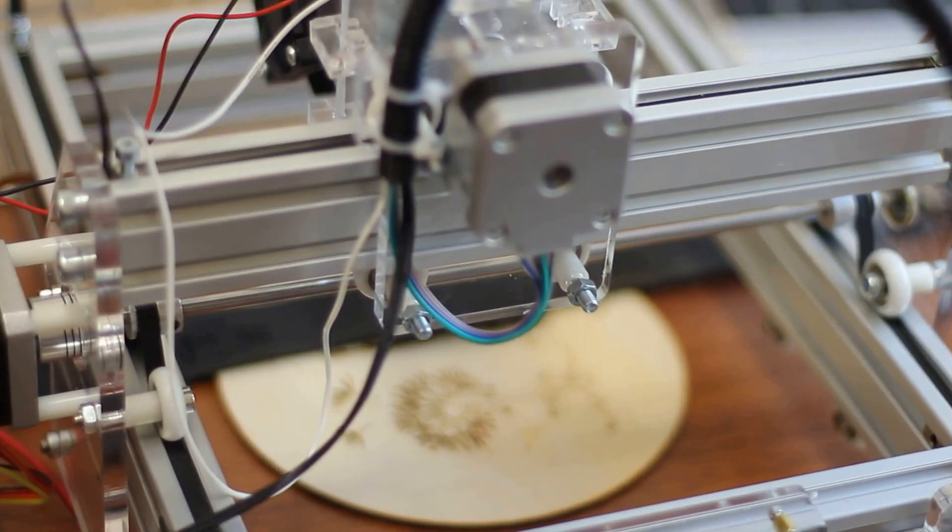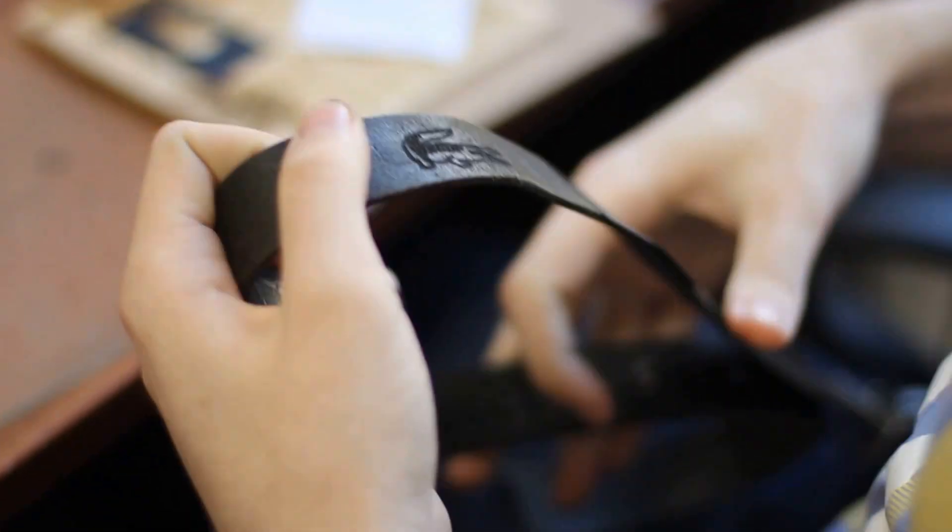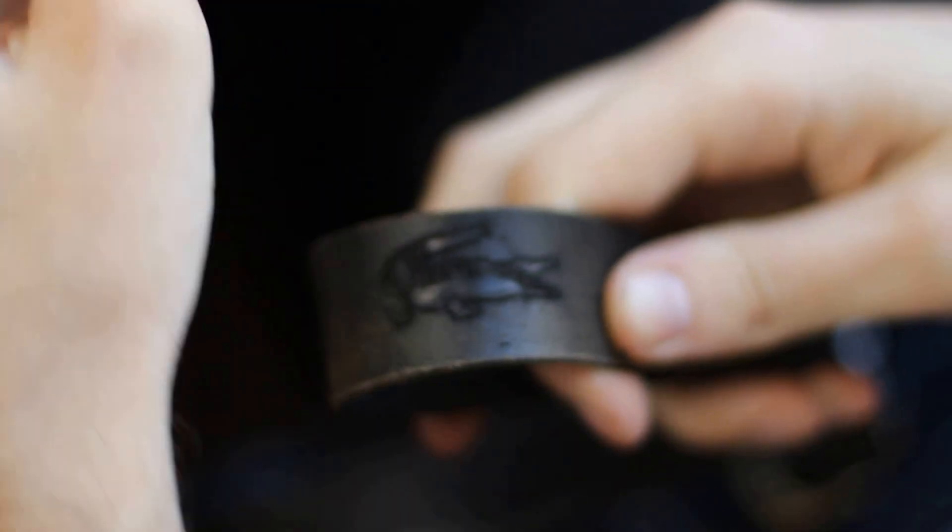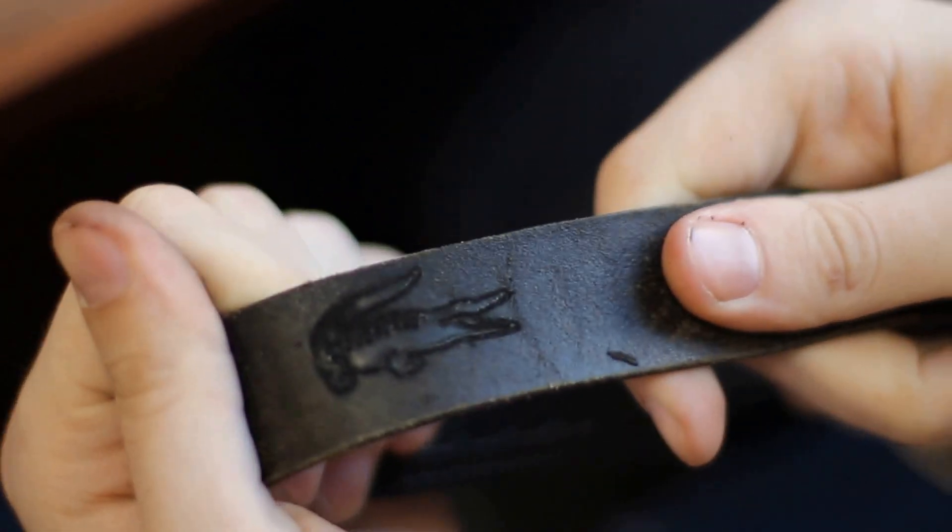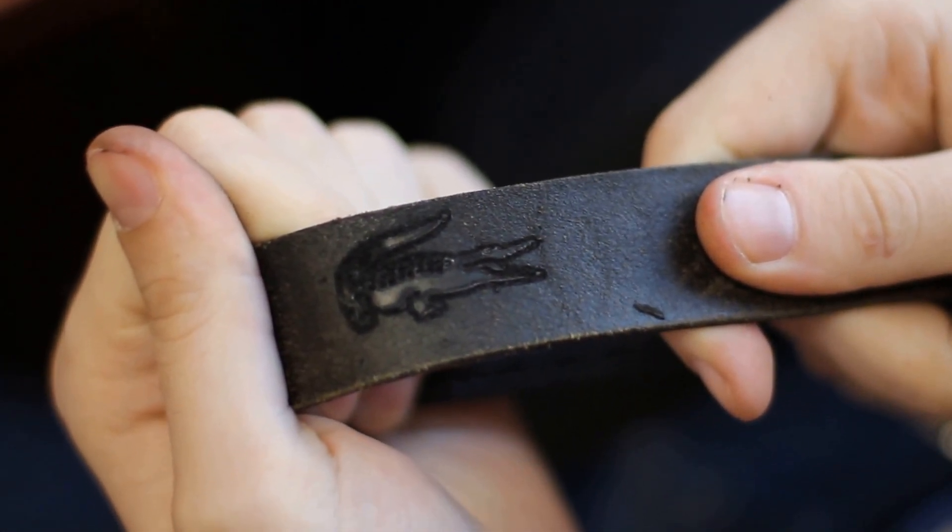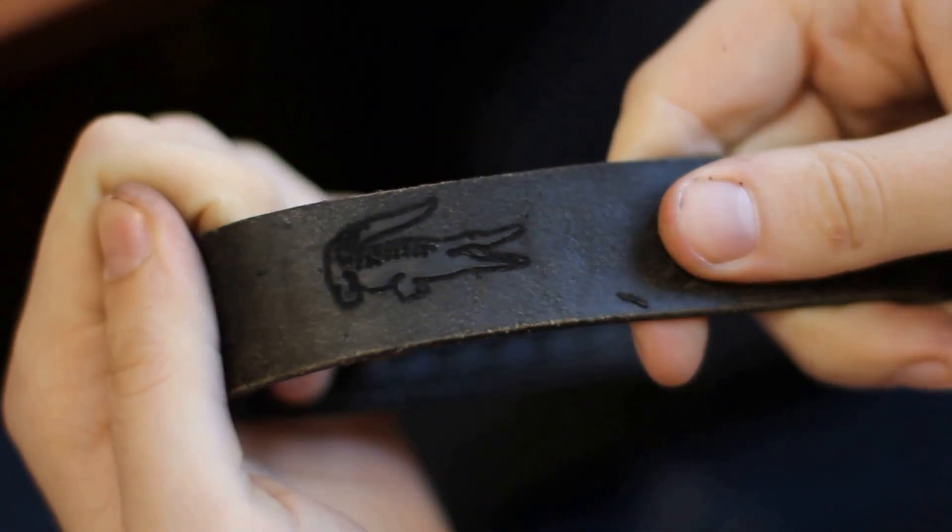Okay, we're done. Let's see the result. We take it from here and just remove the film. You can see this is our crocodile. You just need to clean it up, maybe polish a little bit, and that's pretty much it. It didn't burn the leather.